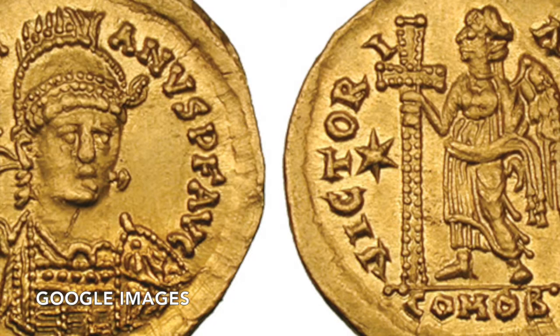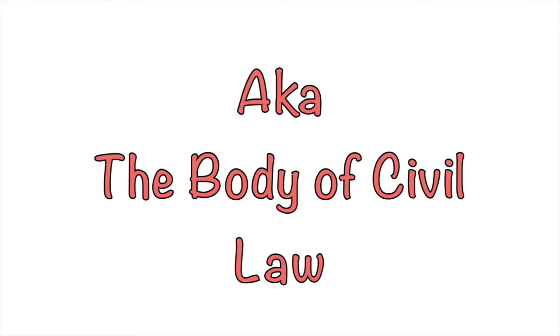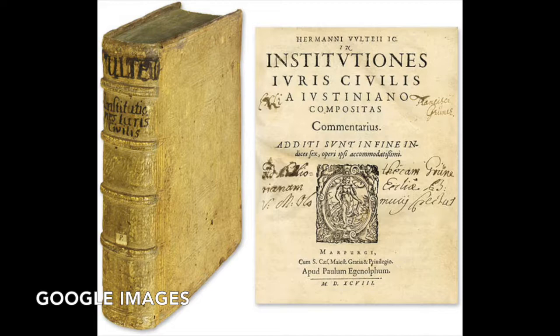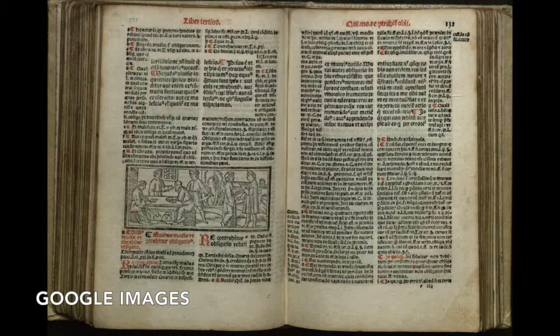Justinian also created a law code of Roman law. Justinian's Code is also known as the Body of Civil Law. This became the source of imperial law in the Eastern Roman Empire until 1453. Since it was the last written product of the Eastern Roman Empire to be written in Latin, it was also used in the west and became the foundation for many of the legal systems in Europe.